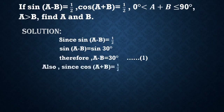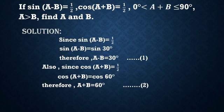Also, since cos(A+B) = 1/2, but in trigonometric cos values, cos 60° = 1/2. That's why cos(A+B) = cos 60°. Therefore, A+B = 60°. This is equation 2.